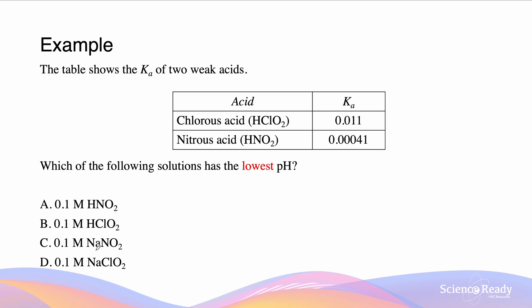Now, if it's the lowest pH, we're going to be looking at the acids and not the conjugate base salts. So it's either A or B, and the stronger acid, chlorous acid, is going to be our answer, which is B.